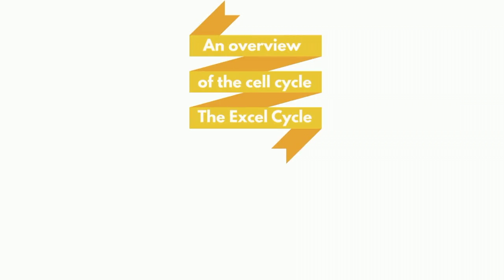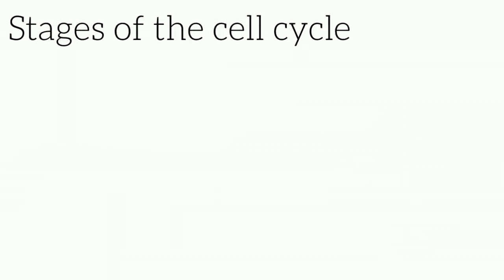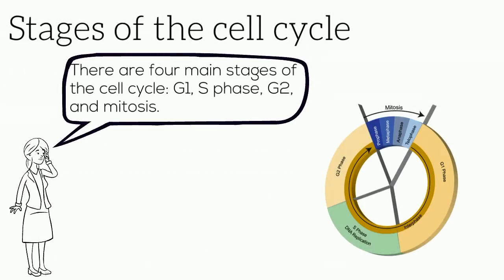Welcome back to the Excel Cycle. Today we'll be looking at an overview of the cell cycle. There are four main stages of the cell cycle: G1, S phase, G2, and mitosis.